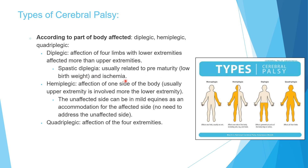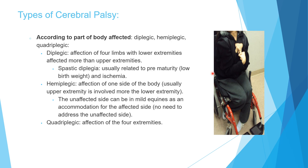Hemiplegic cerebral palsy means one side of the body is affected more than the other, and it usually affects the upper extremity more than the lower. In hemiplegic patients you may find mild equinus on the unaffected side for compensation — you don't need to address it surgically. Quadriplegic cerebral palsy means marked affection of all four extremities.